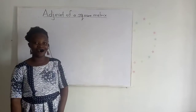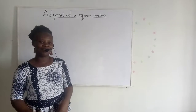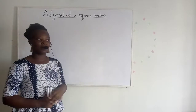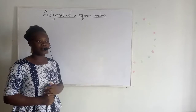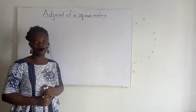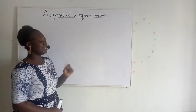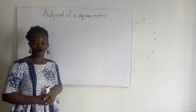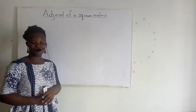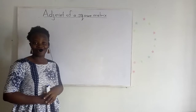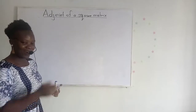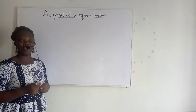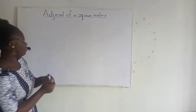Hello, welcome once again to a math classroom. Don't forget to subscribe to our channel. In a previous lecture we were talking about minors and cofactors. In this lecture we are looking at the adjoint of a square matrix. I told you the cofactors were very necessary for finding the adjoint of a matrix, so let's look at the previous example — we are going to use that same example to find the adjoint.